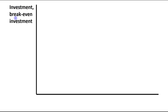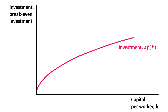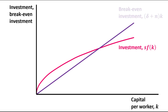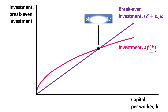On the vertical axis we have investment and breakeven investment, and on the horizontal axis we have capital per worker. This is the investment function. This is breakeven investment, denoted by (delta plus N) times K. The intersection point of these two curves is the steady state, and the capital stock at this steady state level is K star — the steady state level of capital per worker.